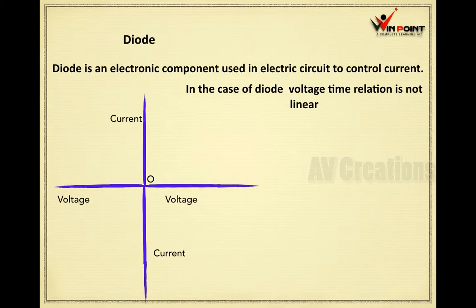When we are drawing a graph between current and voltage for a diode, in diode there are two cases. One is current in reverse direction. Second one is current in forward direction. So, when we are considering this is the forward area and this is the reverse area, the graph is not linear.